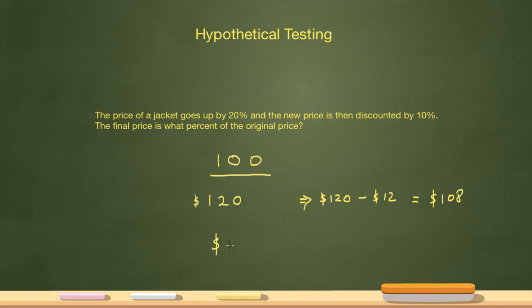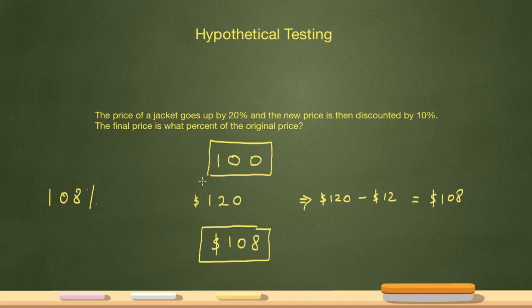So my price of the jacket at this point is $108. The question is saying the final price, which is 108, is what percent of the original price? The answer here is going to be 108% because the final price is 108% of 100.